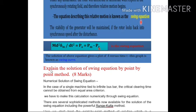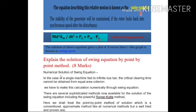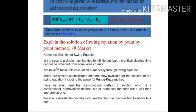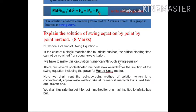In university exams, a common 8-mark question is: explain the solution of the swing equation by the point-by-point method. This is also known as the numerical solution of the swing equation. For a single machine tied to an infinite bus bar, the critical clearing time cannot be obtained from the equal area criterion — only the critical clearing angle can be calculated. However, the critical clearing time is also very important for designing circuit breakers, so we must calculate it numerically through the swing equation.